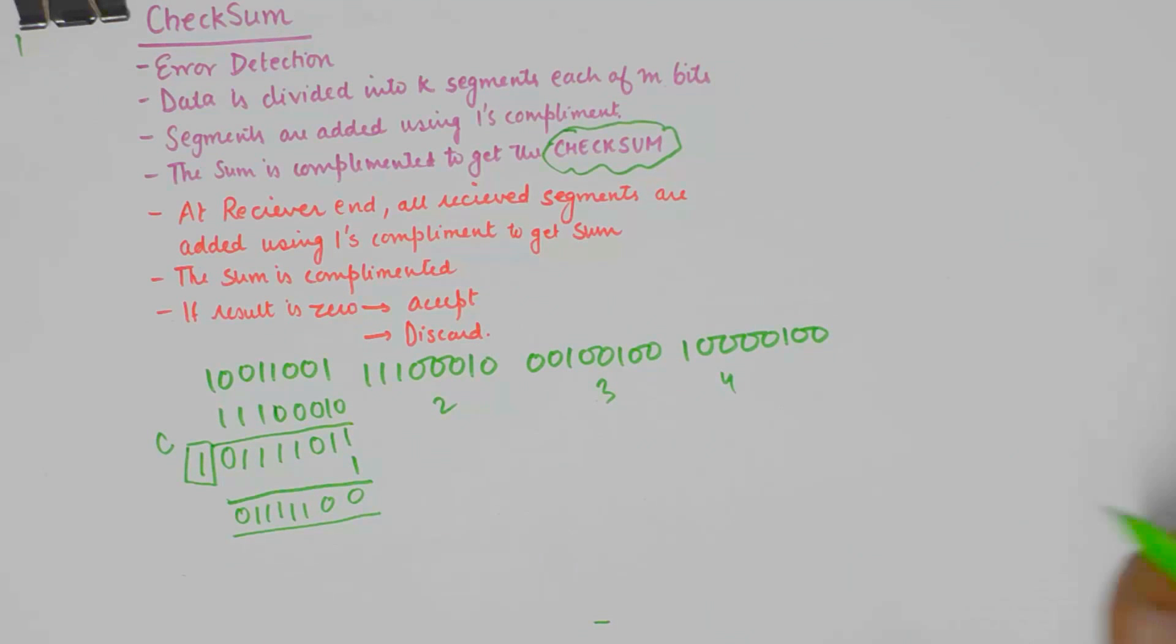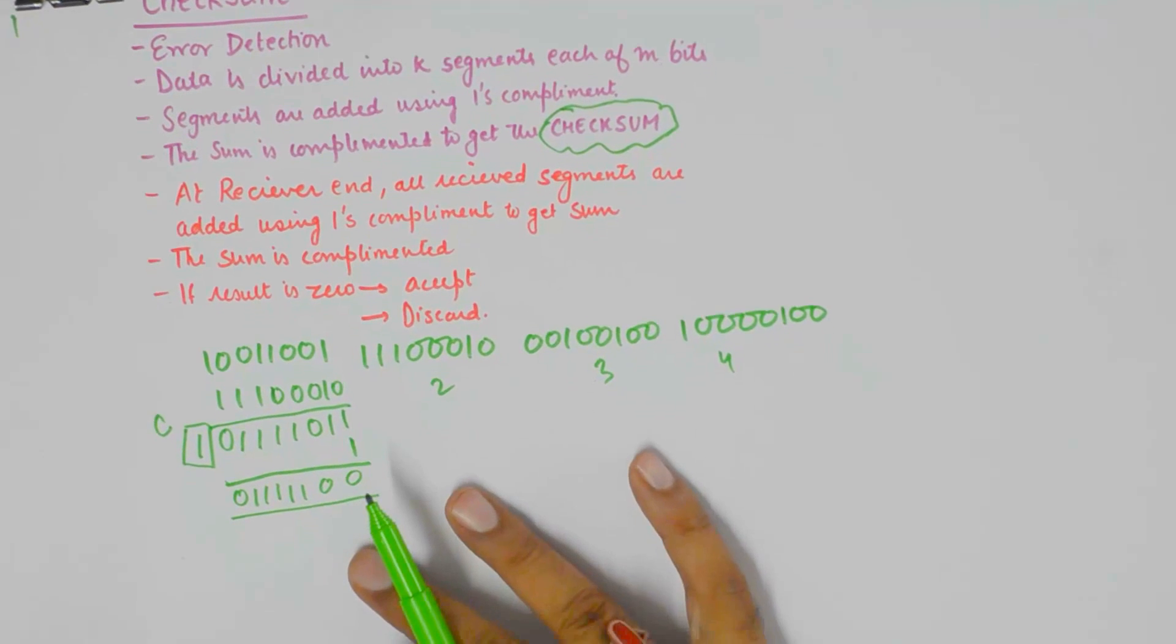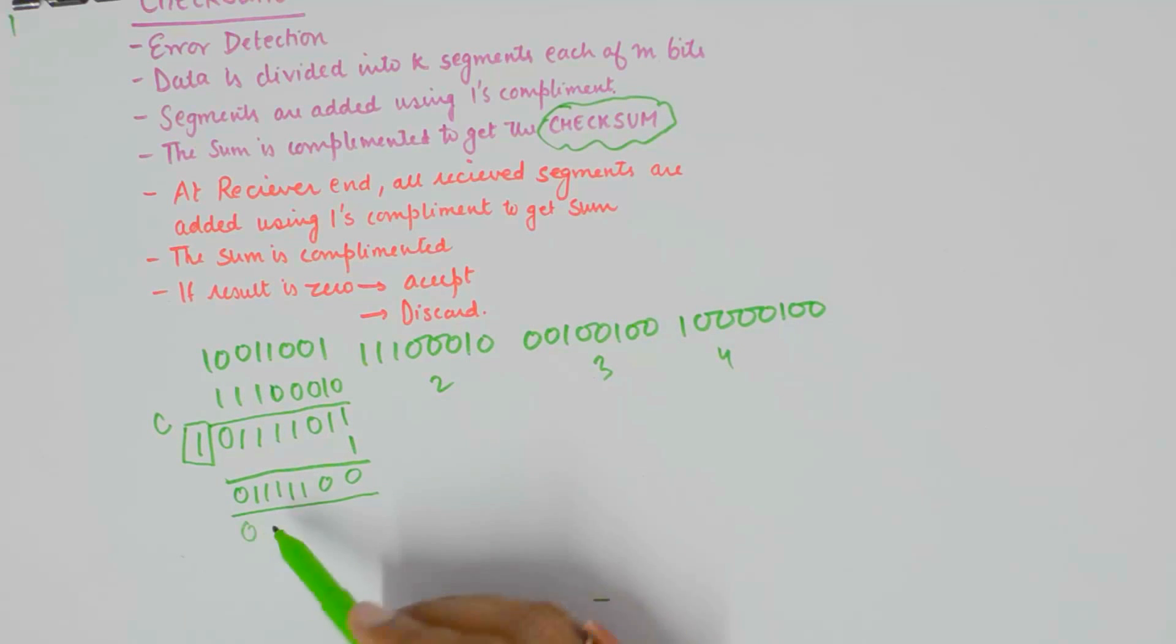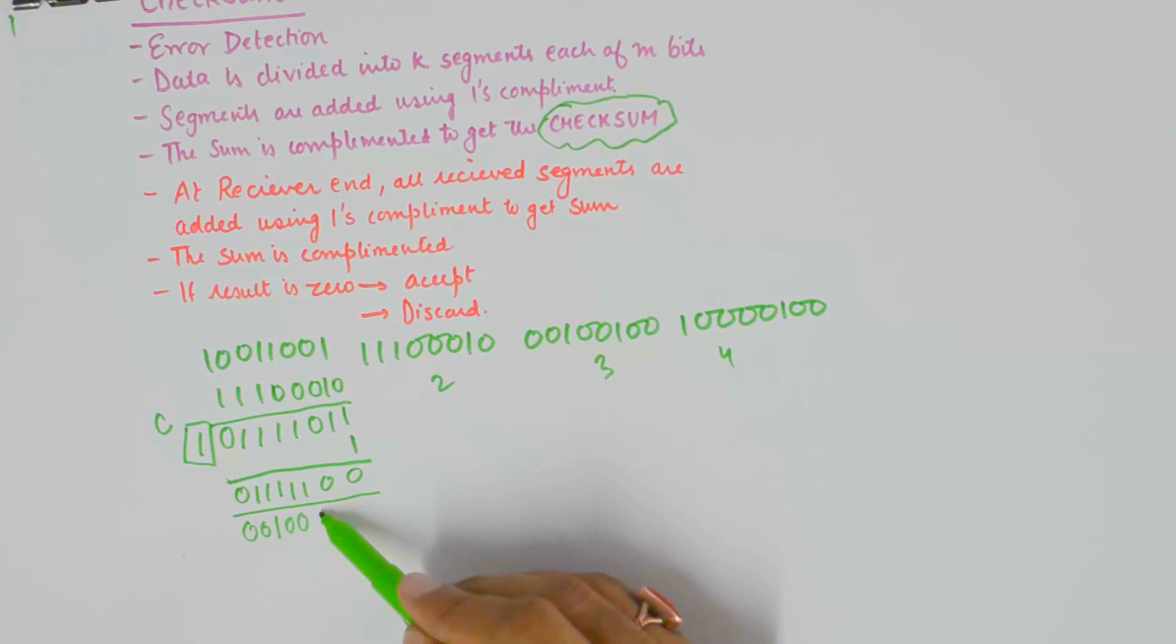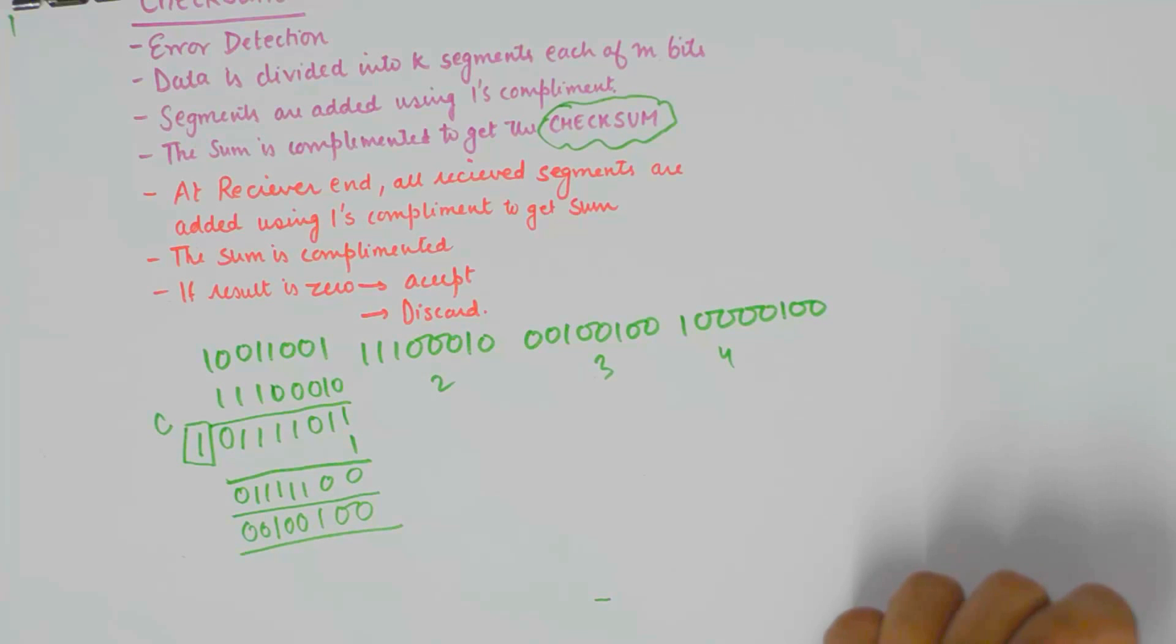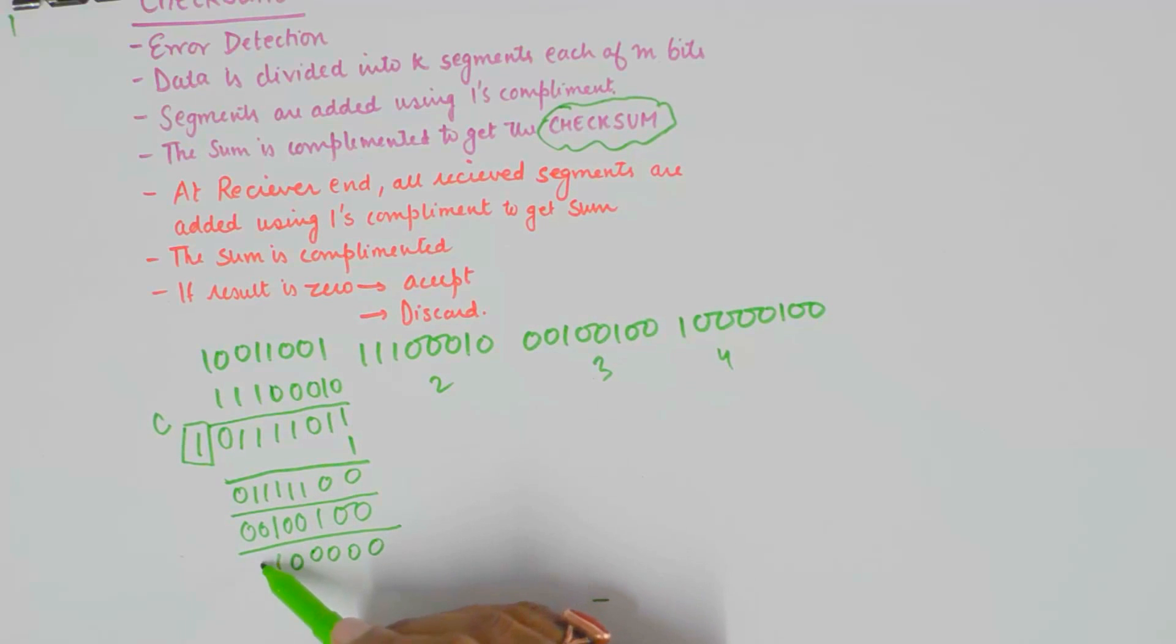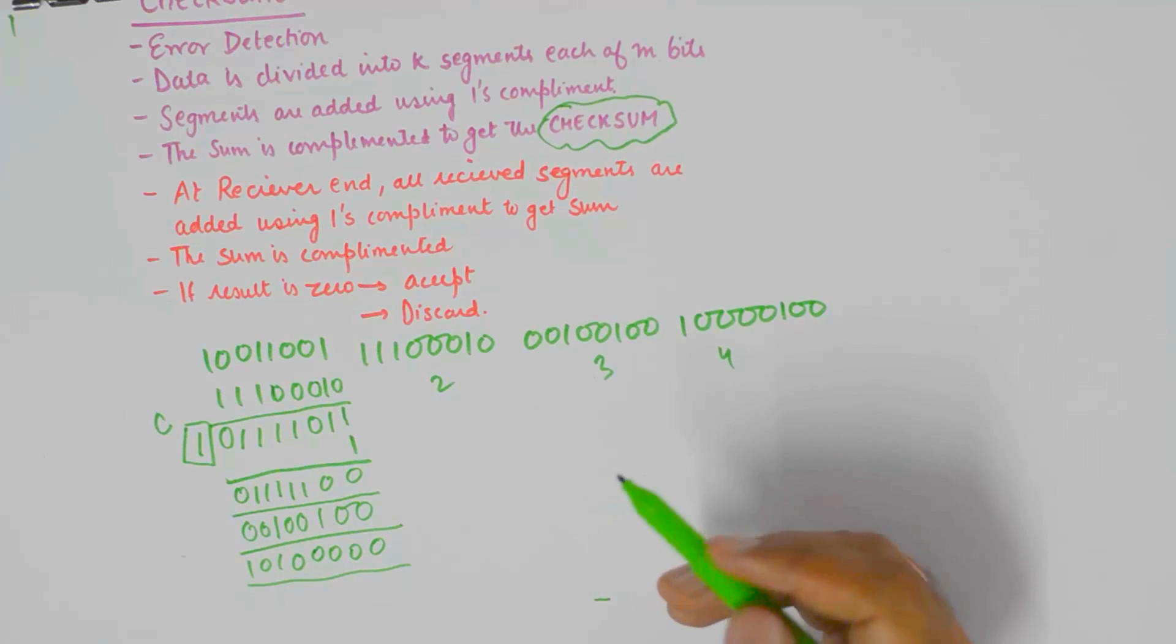Now, what we do is, we add the third segment to this. Adding third segment would mean, I will add 00100100. Without any carry.